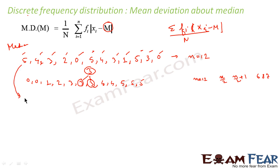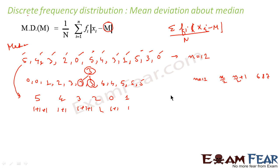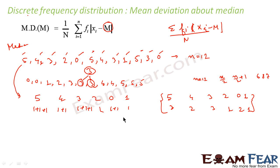Now let's do the same thing using a frequency distribution table. From the raw data we get: x values 0, 1, 2, 3, 4, 5 with frequencies 2, 1, 1, 3, 2, 3. Arranging this in ascending order gives us x: 0, 1, 2, 3, 4, 5 with fi: 2, 1, 1, 3, 2, 3.